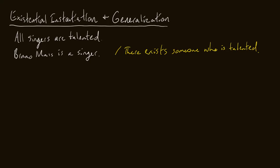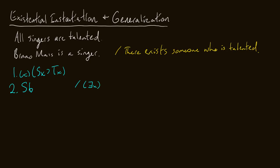Now let's actually do it. We have the premise: all singers are talented, which is represented as 'for all x, if x is a singer, then x is talented.' Then, Bruno Mars is a singer — we substitute B for x. The conclusion we want to reach is that there exists something in this universe such that x is talented.